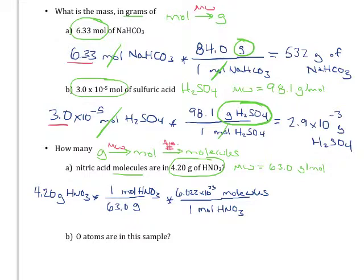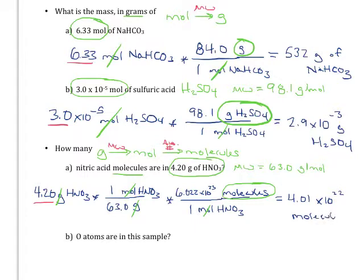Watching our units: grams cancel turning into moles, then moles cancel turning into molecules — the correct units for our final answer. Make sure you're comfortable with all of these exponents. Rounding to three significant figures, your final answer should be 4.01×10²² molecules of nitric acid.